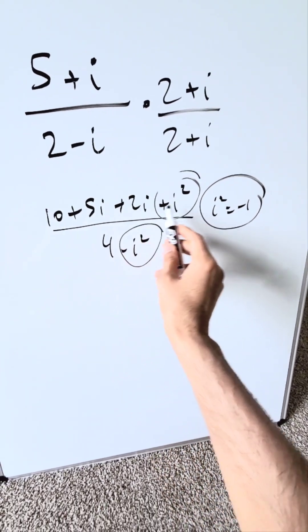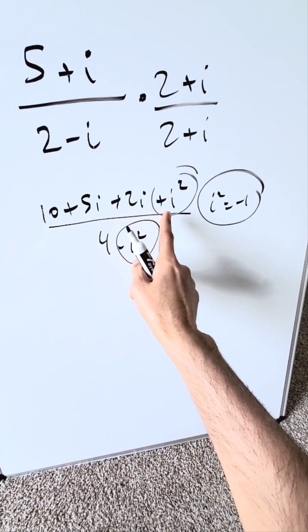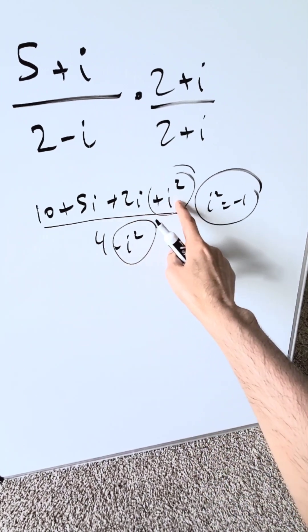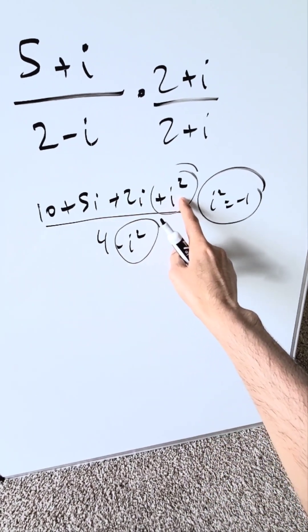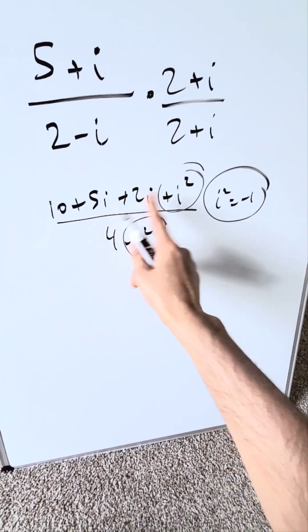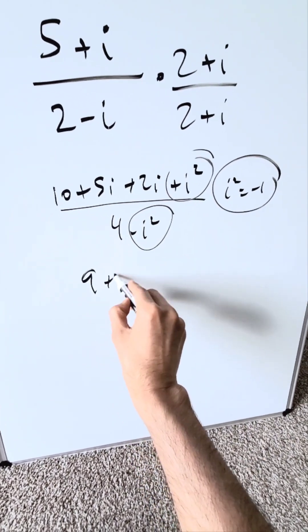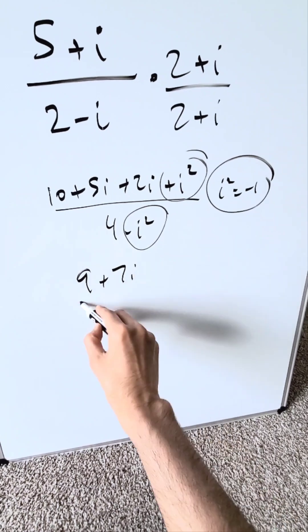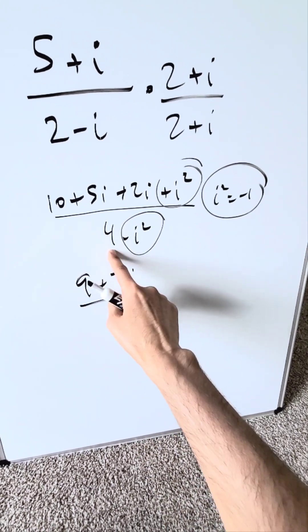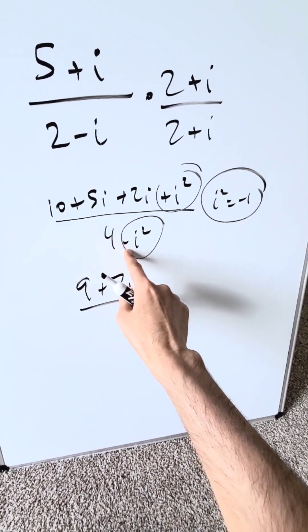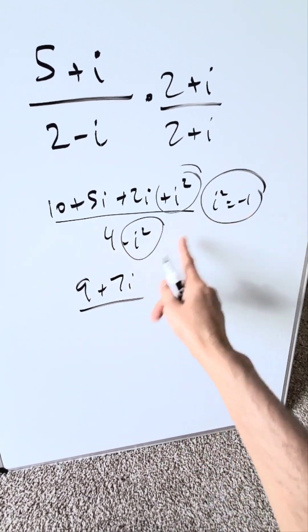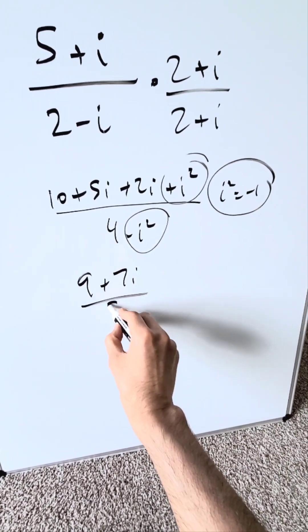In the numerator, when you combine the like terms, there's a minus 1, so you'll have 10 minus 1, which gives 9 plus 7i. In the denominator, you'll have 4 minus minus 1, which will be 5.